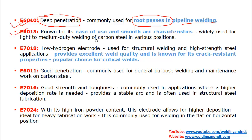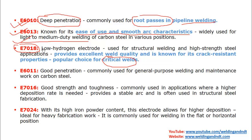E6013 is one of the most versatile carbon steel electrodes, known for its ease of use and smooth arc characteristics. It is widely used for light to medium duty welding of carbon steel in almost all positions. E7018 is very popular for critical welding — it is a low hydrogen electrode known for its excellent welding quality and crack resistant properties.